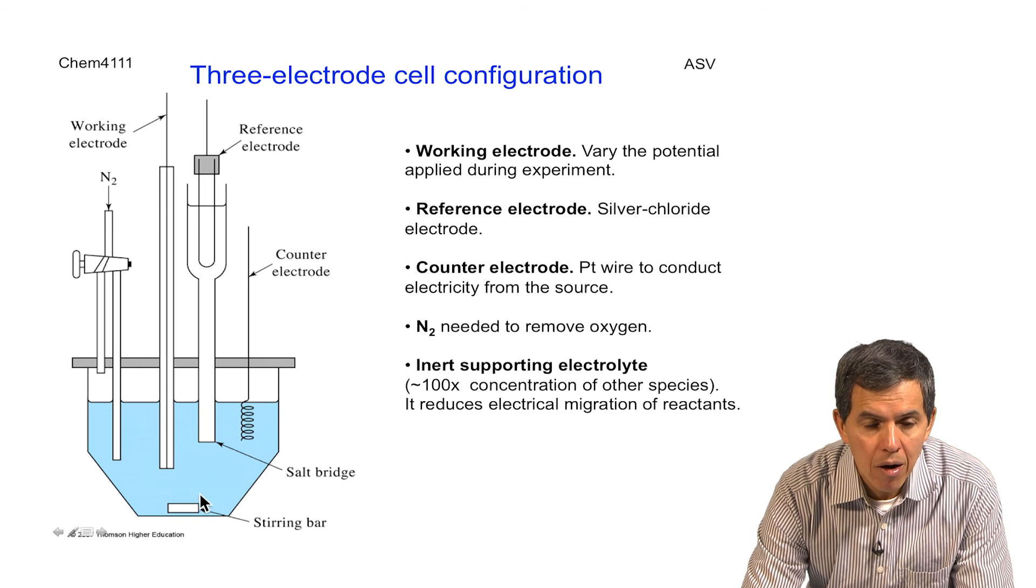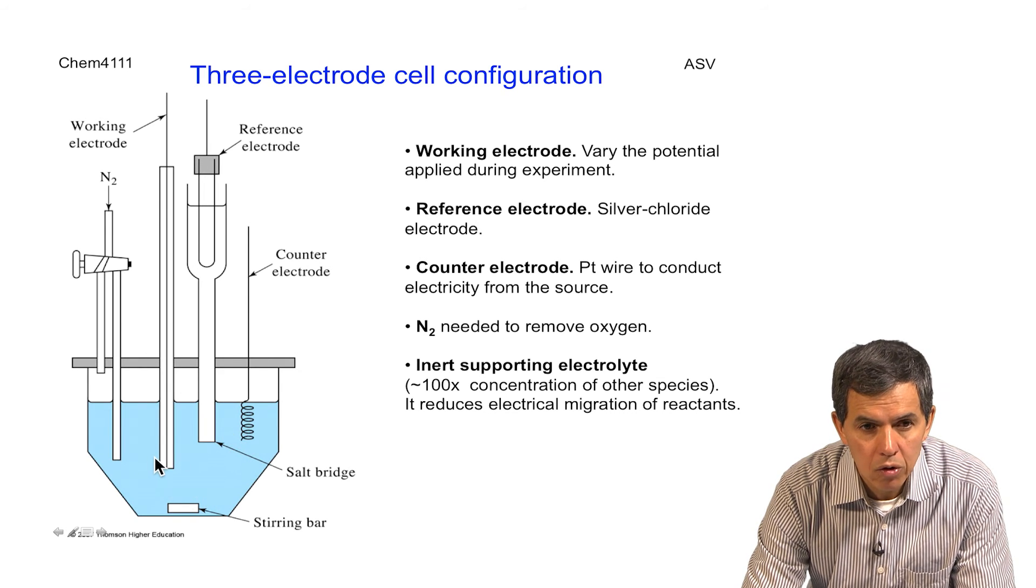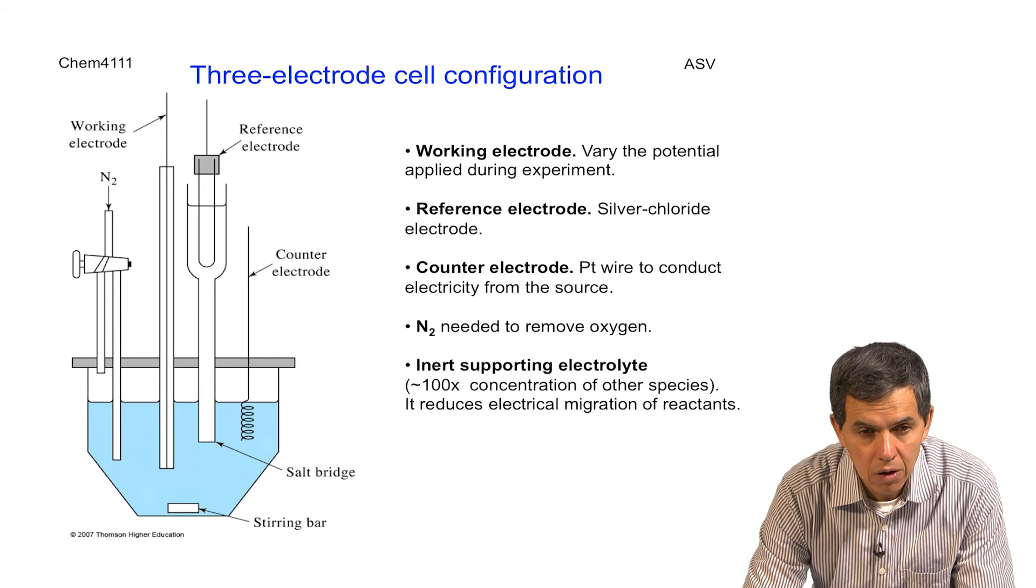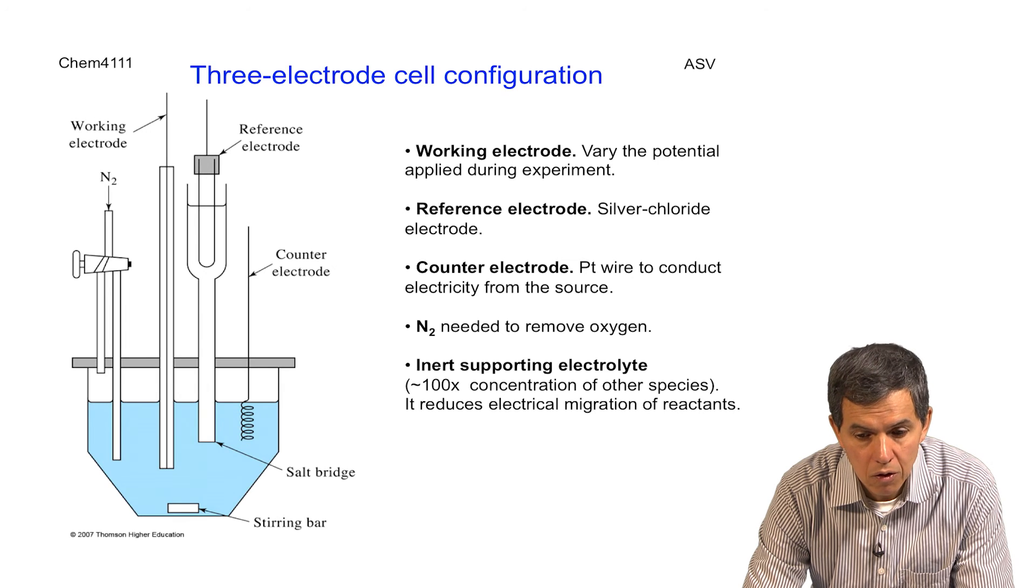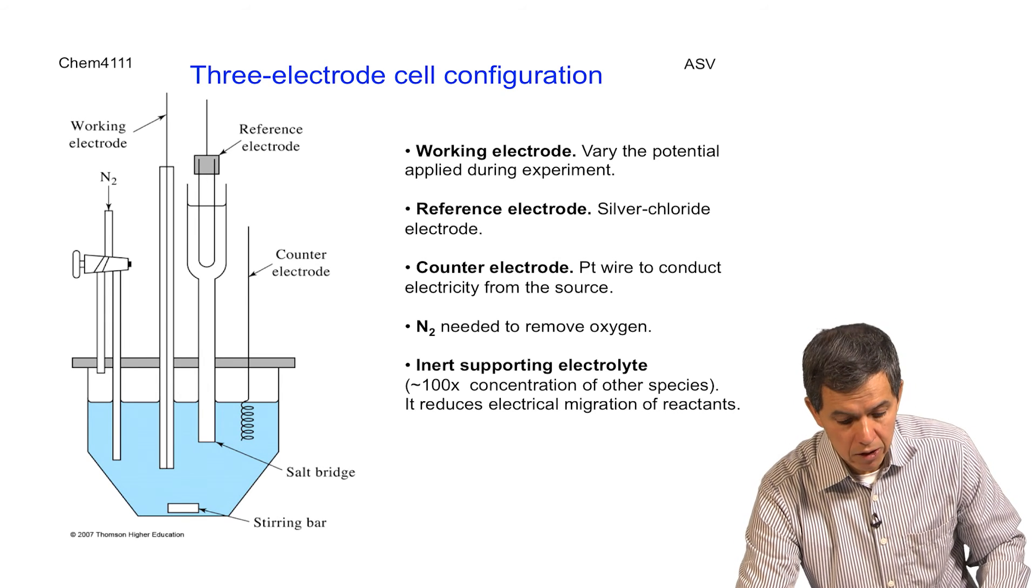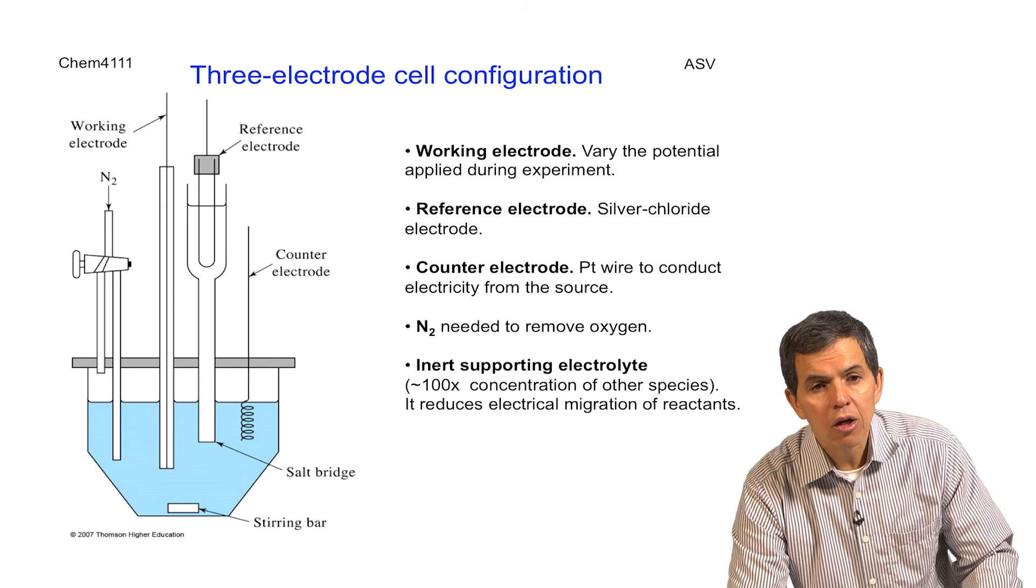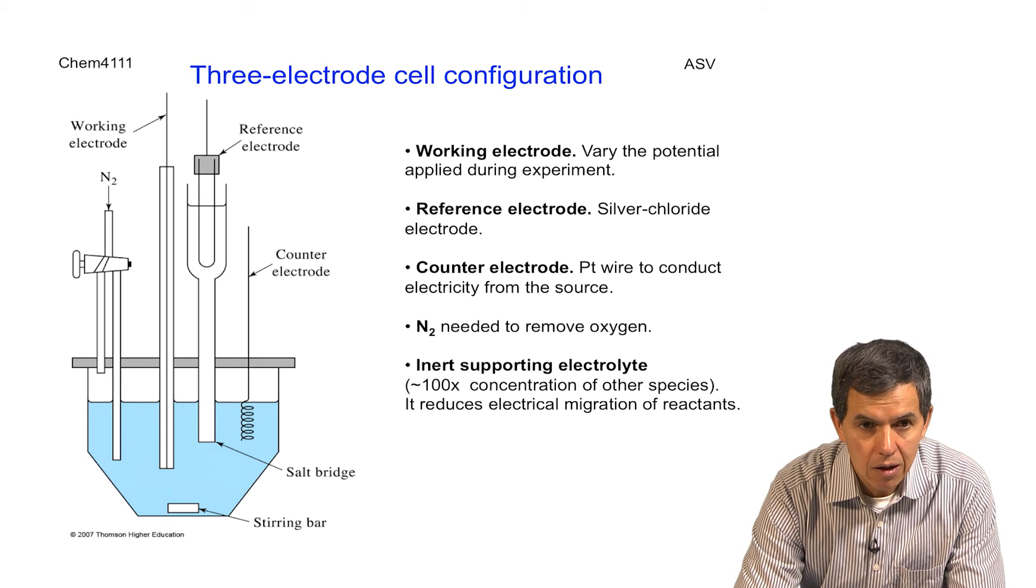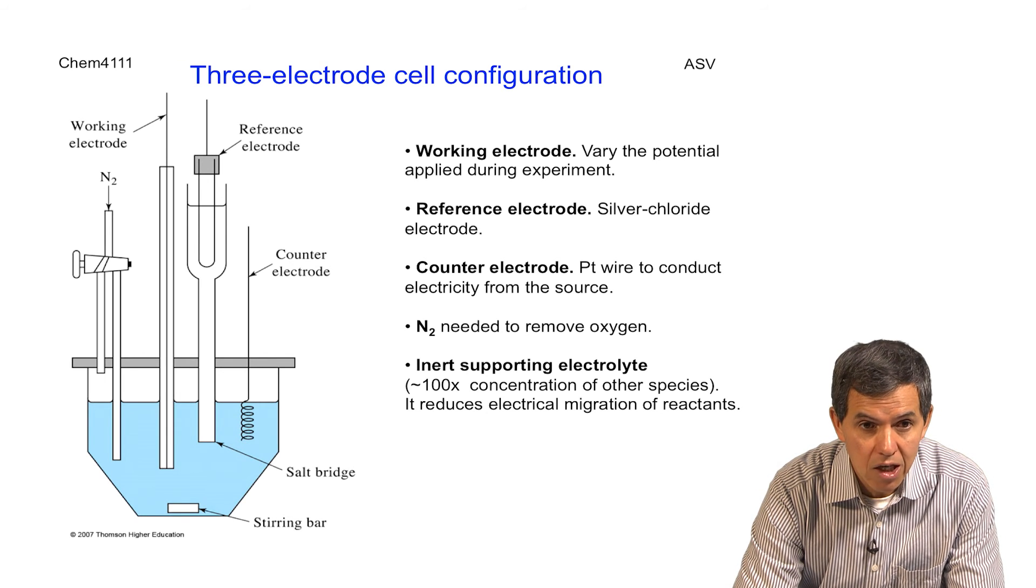And finally, we have the stirring bar that allows us to mix the solution as was described in the previous steps, which is required to bring or to facilitate the transport from the bulk solution to the surface of the electrode. This type of very simple instrumentation, then, allows the scientists to monitor very low levels of analyte by ASV.